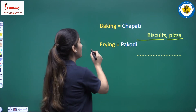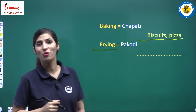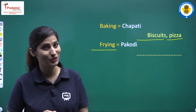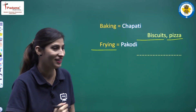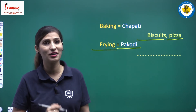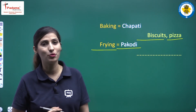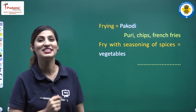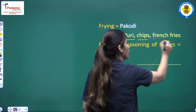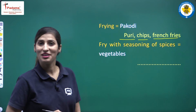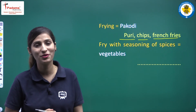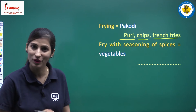Now our next is frying — jusko hum bolte hai talna. What do we make by frying? Pakori. Do you like pakori? Besides pakori, what other things do we make by frying? The answer is poori, chips, and french fries. For all these items, we use the frying method.